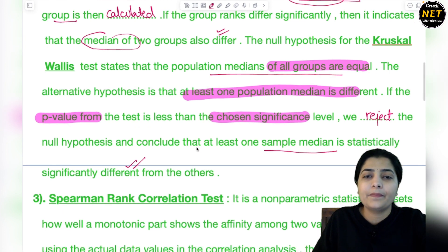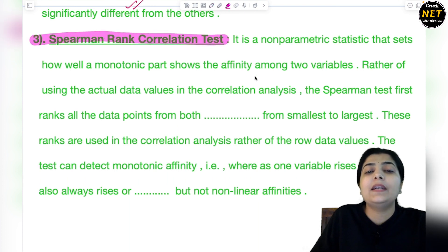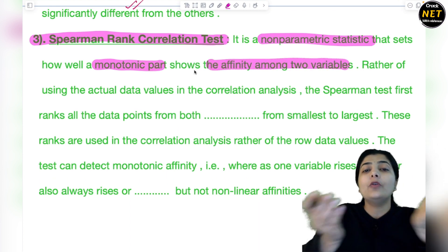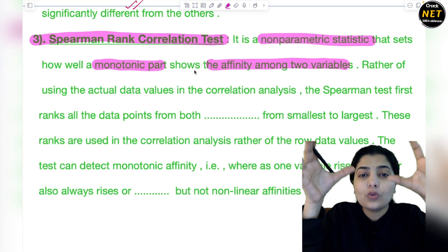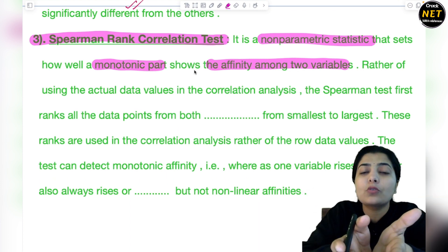Now we have the last method: Spearman Rank Correlation Test. It is a non-parametric statistic that tells how well a monotonic pattern shows the affinity among two variables. You correlate the ranks. You don't find the difference; you have two statistics, two data sets that don't relate to each other, and you bring them together to make them similar by combining the two variables.